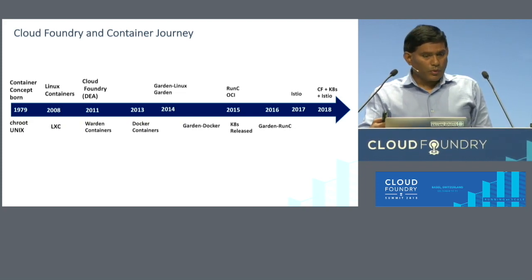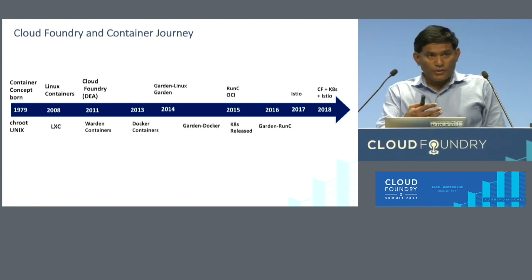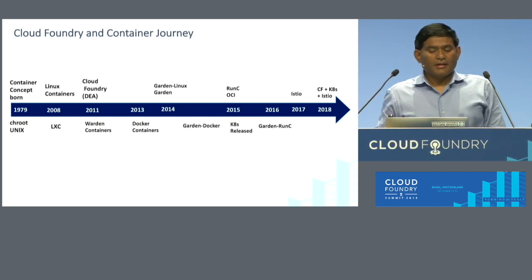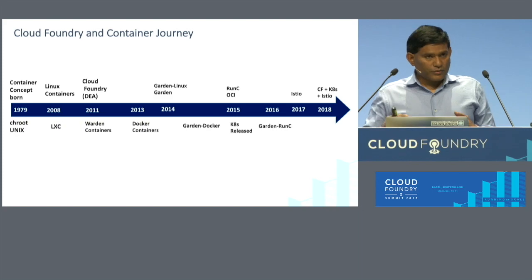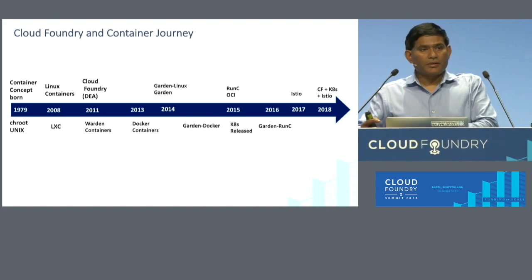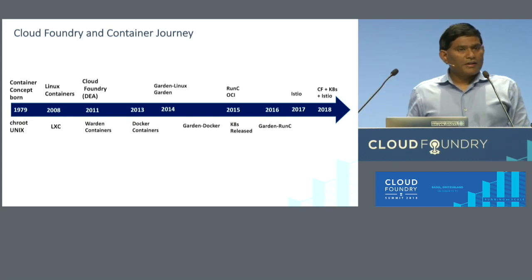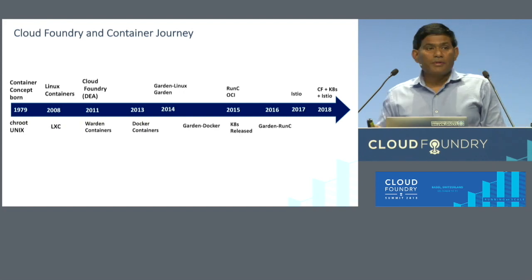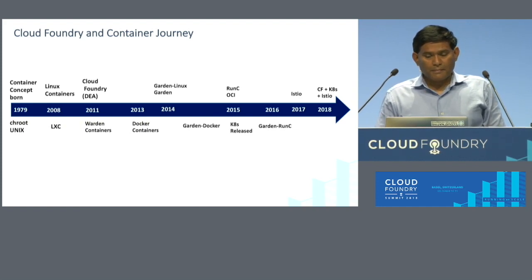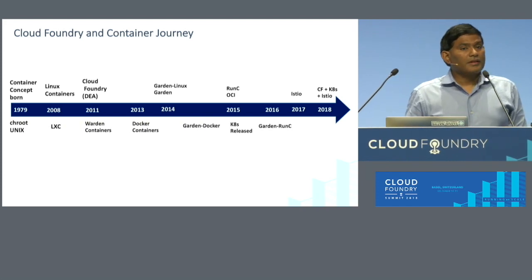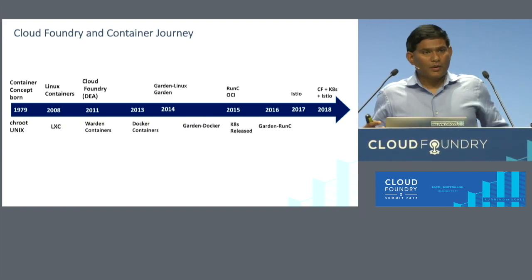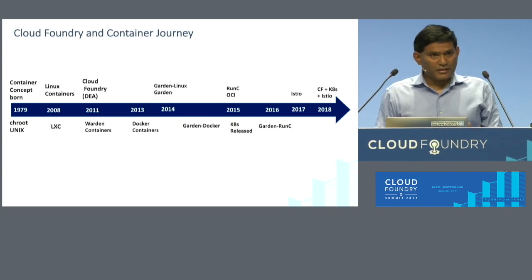From the Warden container point of view, we moved to support Garden and Docker. In 2013, Docker containers were born. In 2014, you had the Garden Linux containers, as we were going from DEAs to Diego in Cloud Foundry. In 2015, Kubernetes was announced and the Open Container Initiative started, with Run-C emerging there. In 2016 we started supporting Garden Run-C. In 2017, IBM, Google, and Lyft announced project Istio. And now in 2018, we're talking about how these three projects work together.